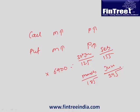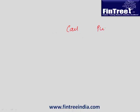We've seen two important relationships — one with strike prices and one with maturity. To summarize: for call options, if the strike price is higher, the value of the call option is lower; but for put options, higher strike price means higher value. If maturity is higher, the value of both call options and put options will be higher.